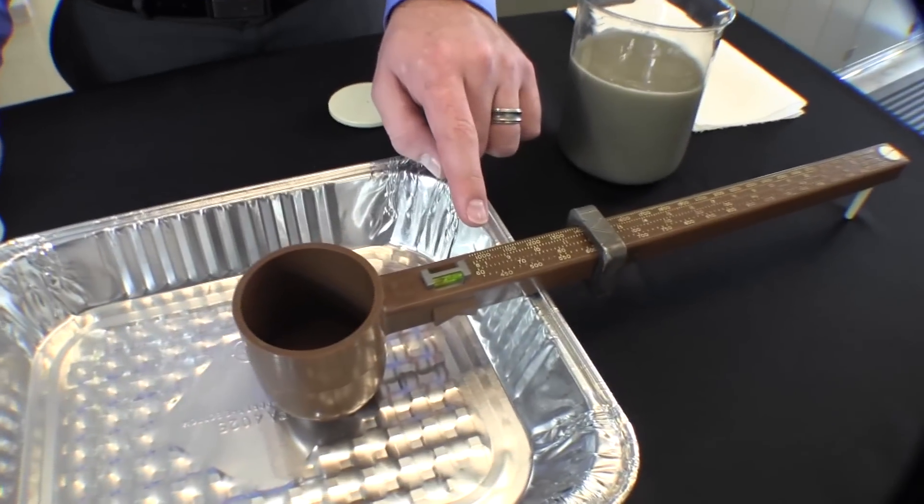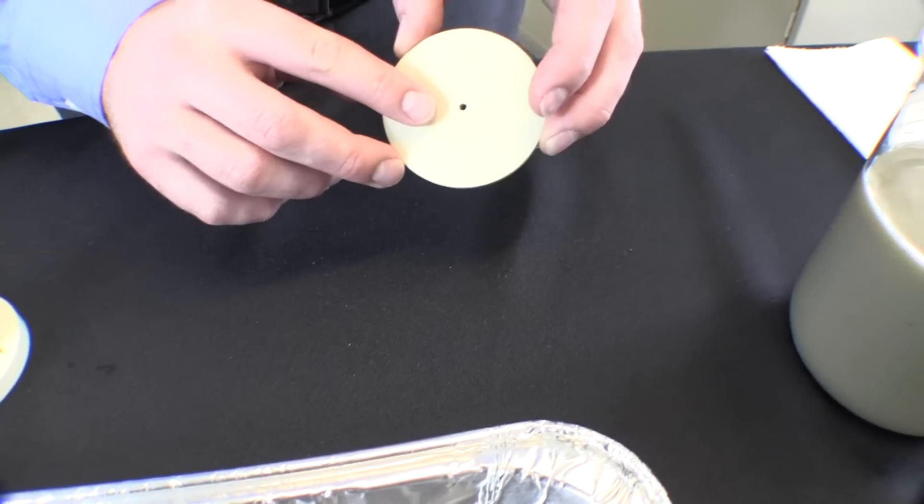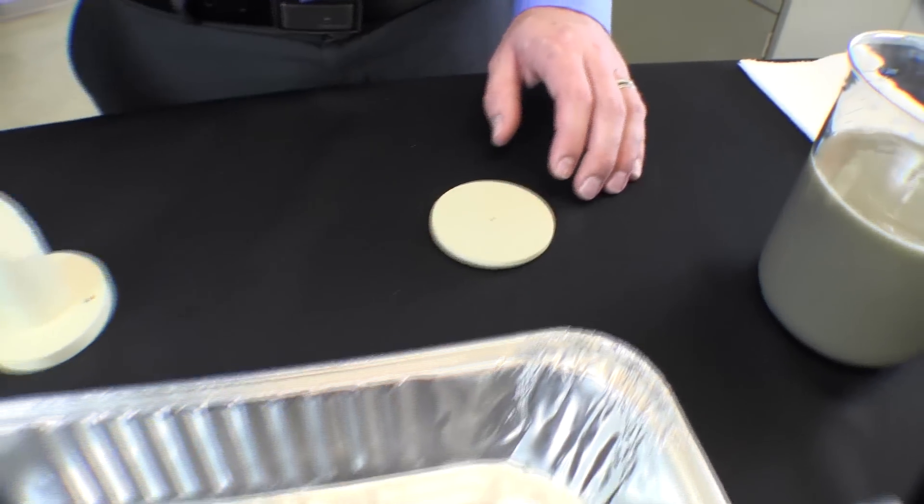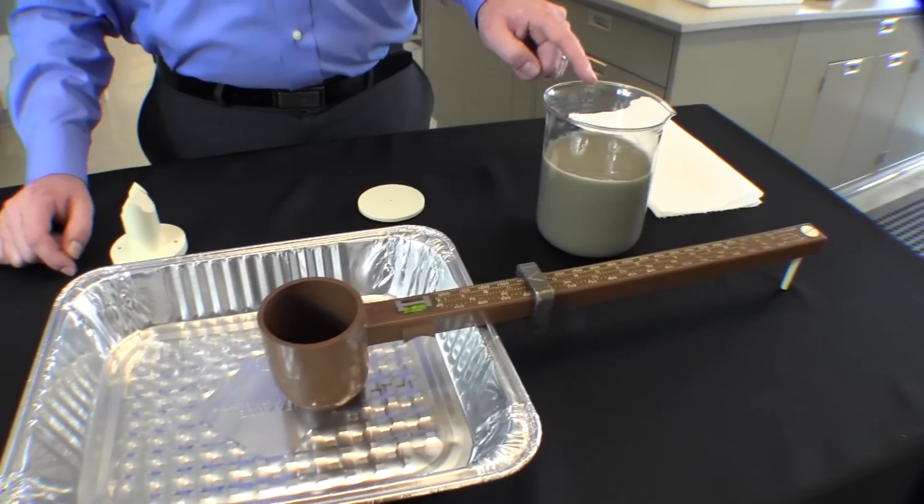A mud balance, a fulcrum, the lid to the mud balance, notice the hole in the top, and finally a book to record your values. And of course you'll need your bentonite drilling fluid.